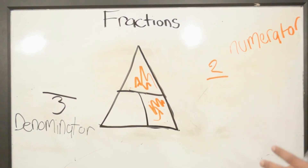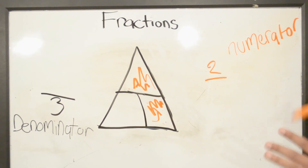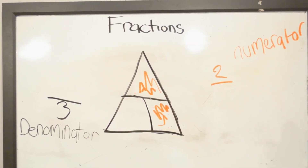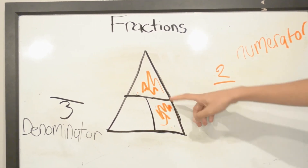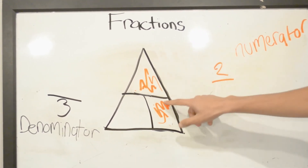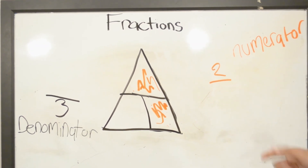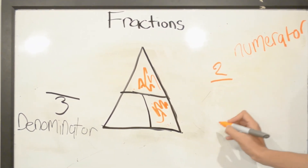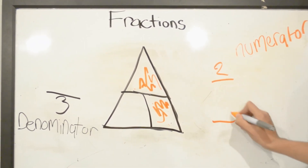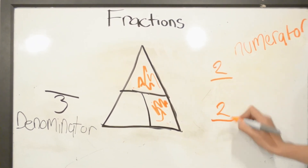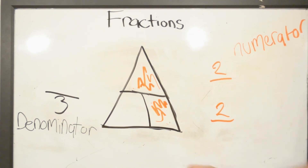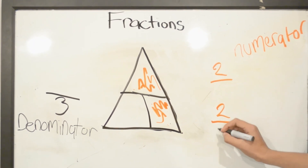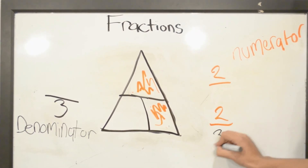The reason why our numerator is 2 is because there are 2 parts shaded in: 1, 2. So we write down a fraction as 2 over 3.